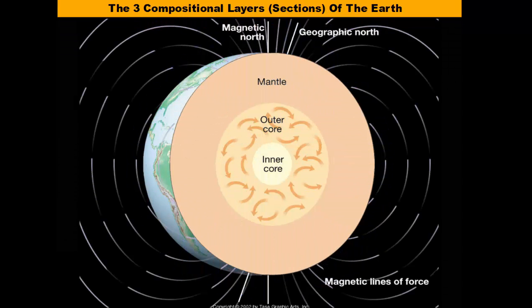Here we have a cross-section of the earth, which means you've taken the earth and cut it in half, and now we can see the inside of the earth. As we can see, there are different layers to our planet. One way to remember how the layers are in proportion to one another is to think of a peach that you've cut open in half.